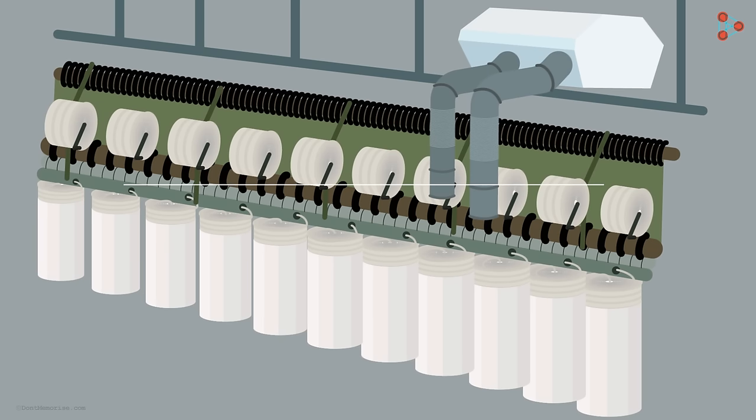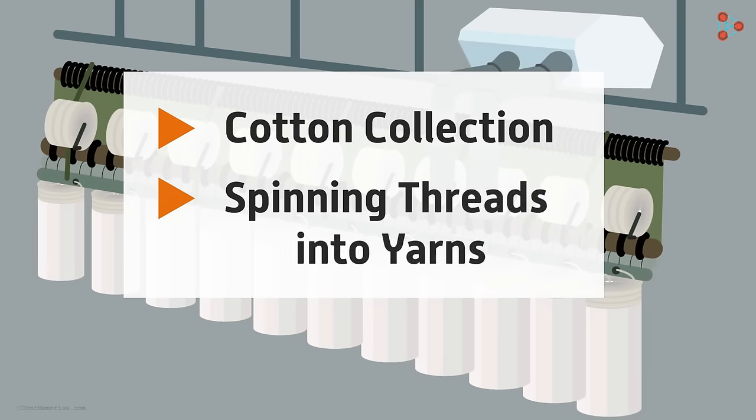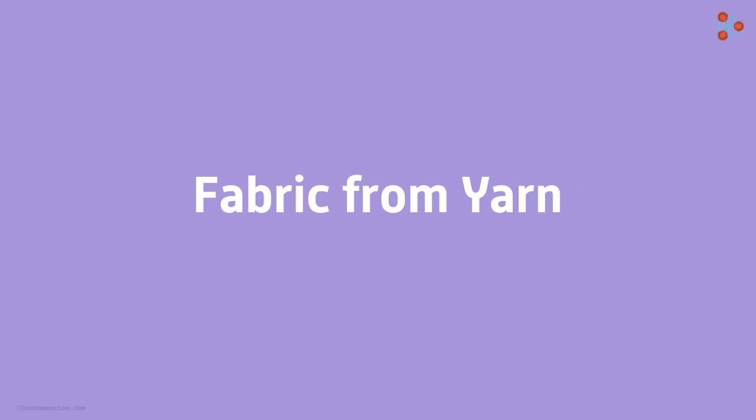With this, we complete the first major step of cotton collection and spinning the thread into yarn. Now we need to make fabric out of the yarn. Let's see that in the next video.